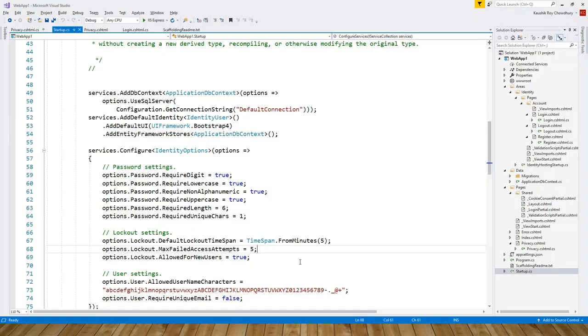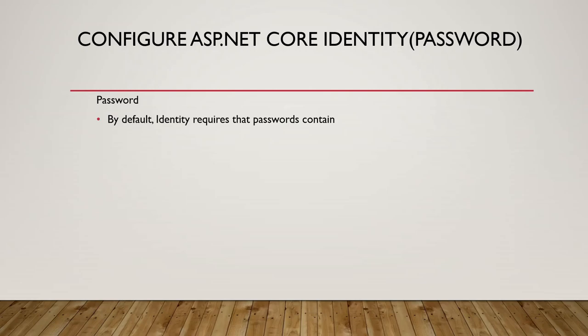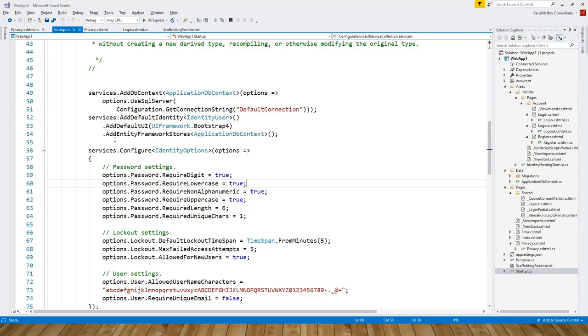Next is the password setting. This is the same piece of code explained earlier, reinforced now because the Microsoft documentation progresses in this sequence. By default, Identity requires that passwords contain an uppercase character, a lowercase character, a digit, a non-alphanumeric character, and must be at least six characters long with a unique character — all set in the Startup class within the Configure method.